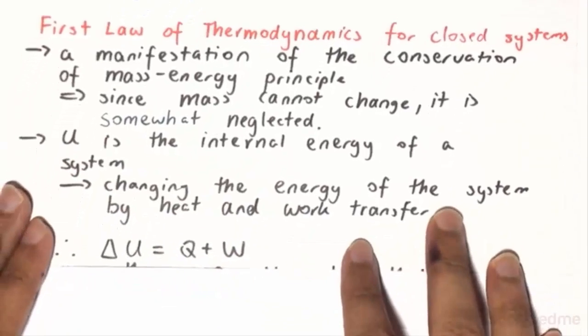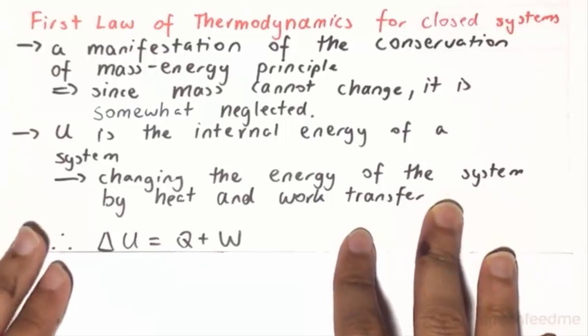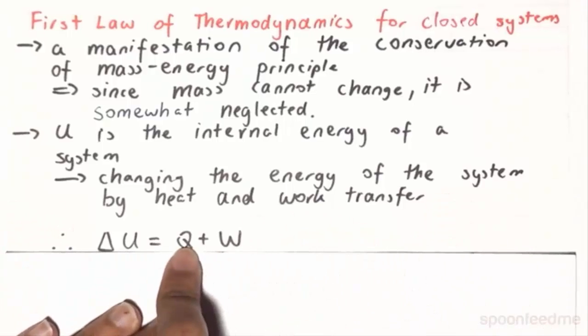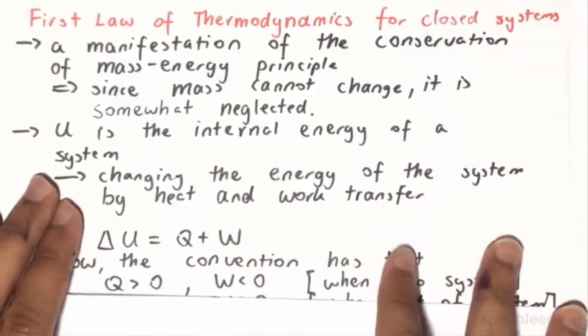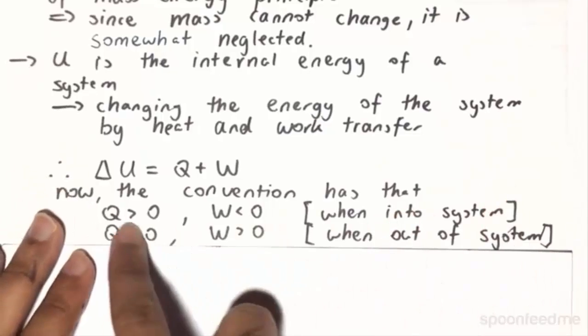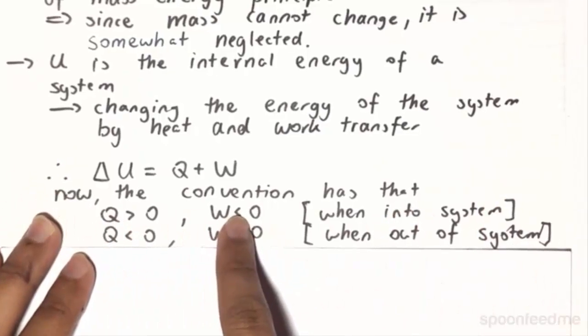And so therefore, it will make sense that the change in U will be the sum of whatever heat transfer has been done to the system and whatever work transfer has been done to the system. Now, by the convention, since our Q and our W, the signs are